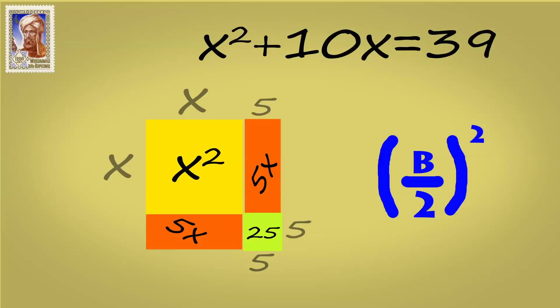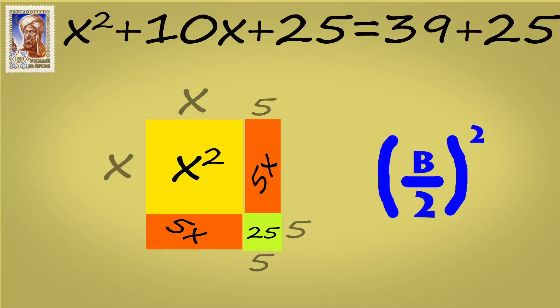All you do is you take b, cut it in half, and then square it. You add it to both sides so it stays equal. And then you got yourself a perfect square.